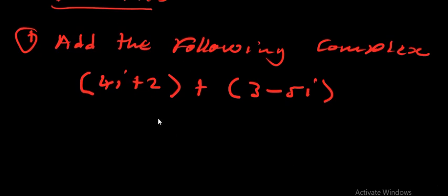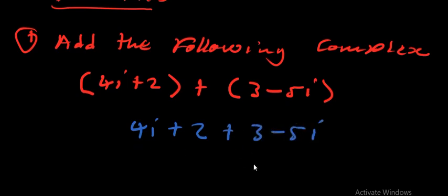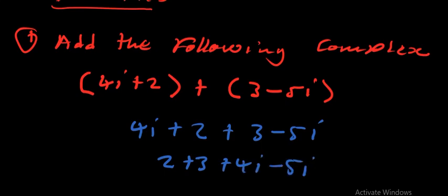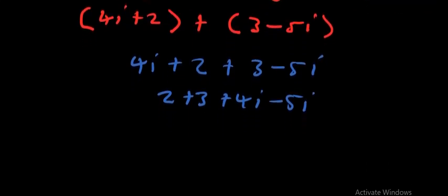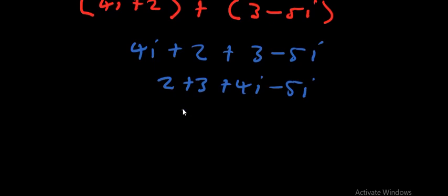This can simply be written as 4i + 2 + 3 − 5i. We collect like terms and we are going to have 2 + 3 + 4i − 5i. The 'i' just stands for imaginary, so 2 + 3 = 5, and 4i − 5i = −i. So the answer for the first example is 5 − i.